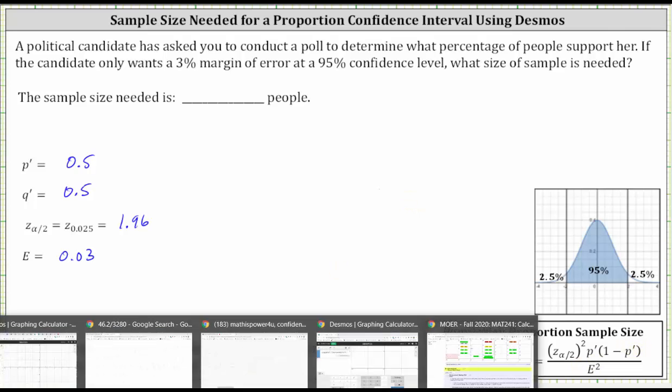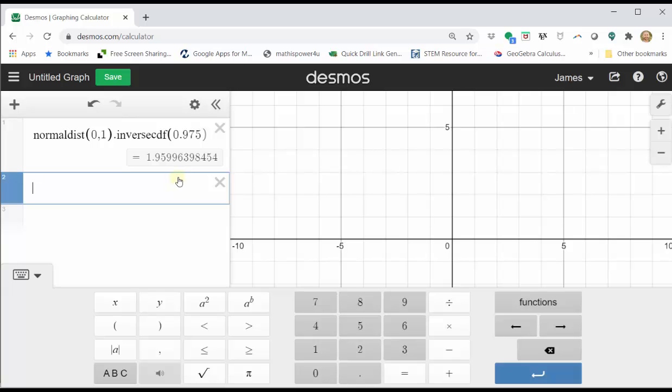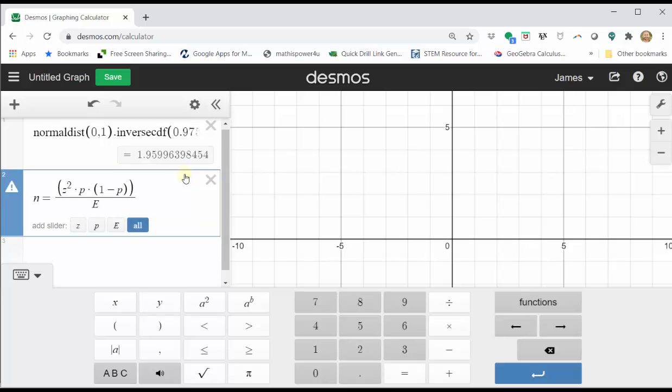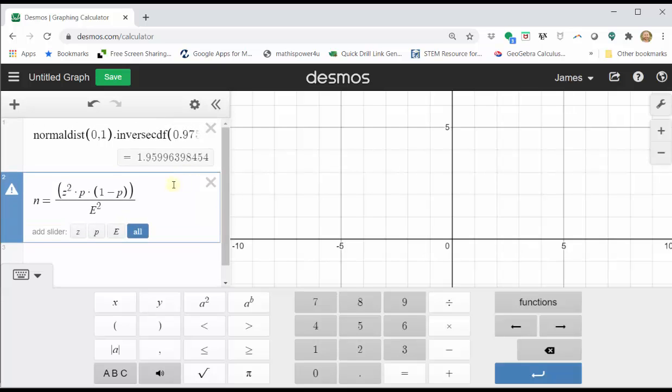Going back to Desmos, click in cell two, enter N equals, open parenthesis, Z raised to the second power times P times, open parenthesis, one minus P, close parenthesis, close parenthesis, divided by E squared. Notice below we have an option to add sliders for Z, P, and E, click all.